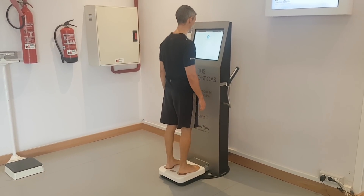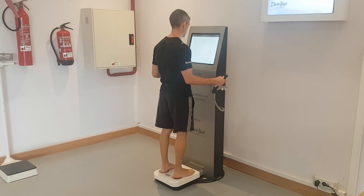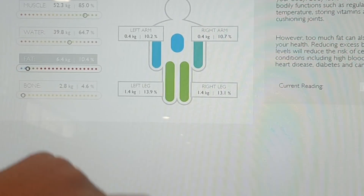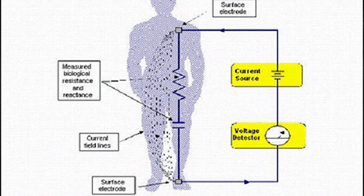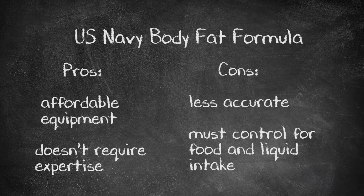Bioelectrical impedance is the method nowadays mostly used in commercial gyms and by nutritionists, and it doesn't require extremely costly equipment or specific expertise. It consists of an apparatus that sends a small electrical current through the body, which encounters different degrees of resistance according to the type of tissue it passes through. Lean tissue is a better conductor than fat tissue, so the current passes through skeletal muscle more quickly than fat. It is less accurate than the previous methods and its results can be altered by external factors such as level of hydration, whether you've been eating or drinking, or if you've just been exercising. On the other hand, it is quite practical, doesn't require much time, and can give you a good estimate provided you always get tested under the same conditions — preferably at the same time of day and controlling for food and liquid intake.